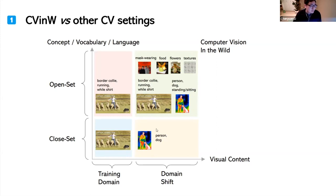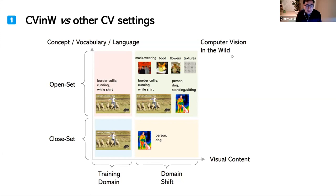The second setting is domain adaptation, domain generalization, or domain shift, which allows new visual domains in the evaluation stage while typically retaining the same concept set. Popular benchmarks include DomainBed and DomainNet. The third setting, currently very popular, is open set recognition, which allows new concepts in the evaluation stage but keeps the input visual domain the same. We are proposing a new setting — computer vision in the wild — which allows flexibility in both dimensions: the input image distribution and the output concept set distribution.